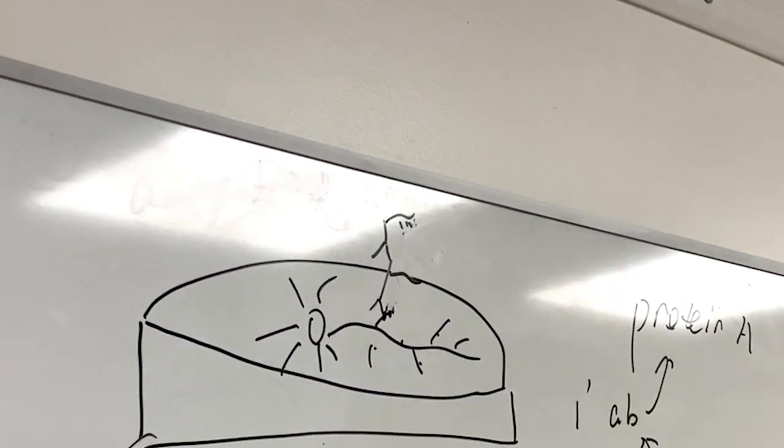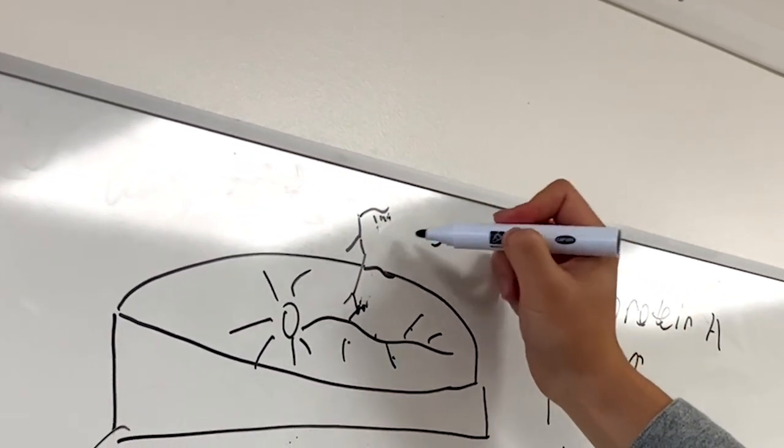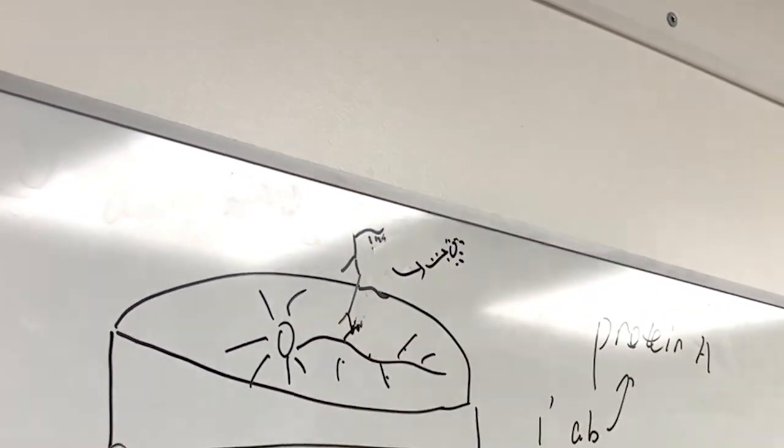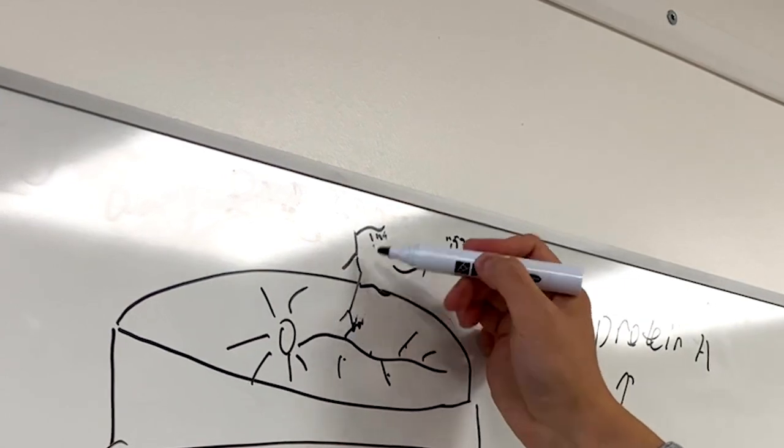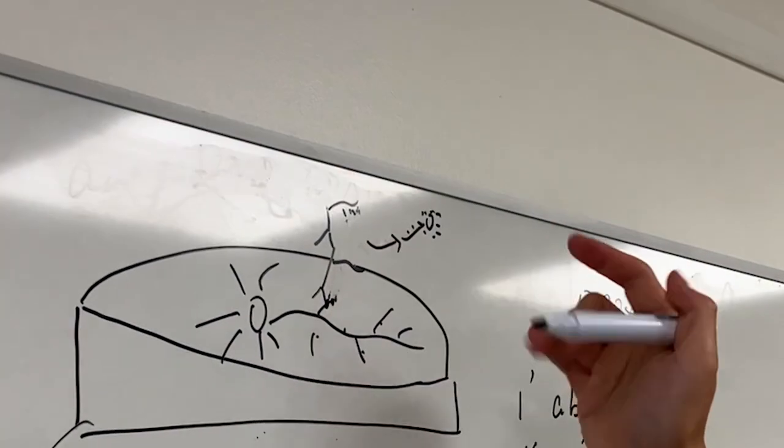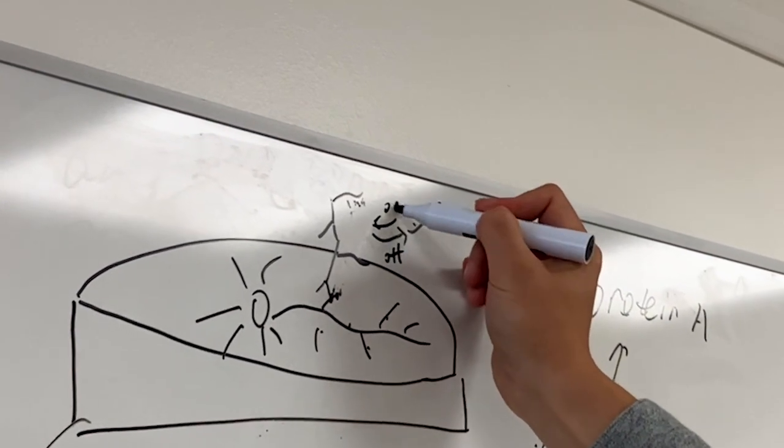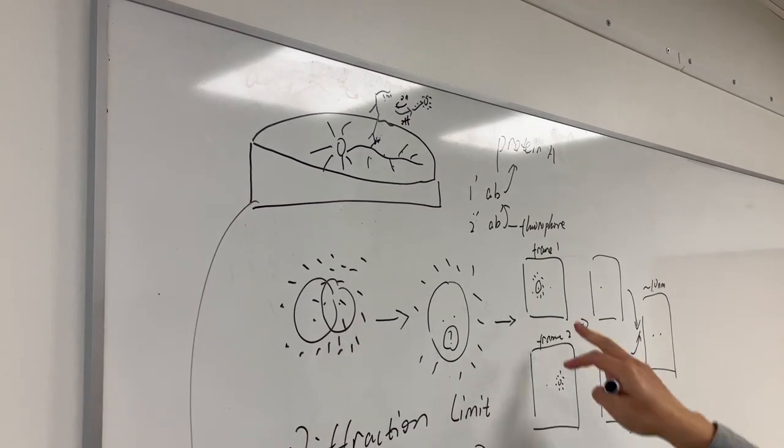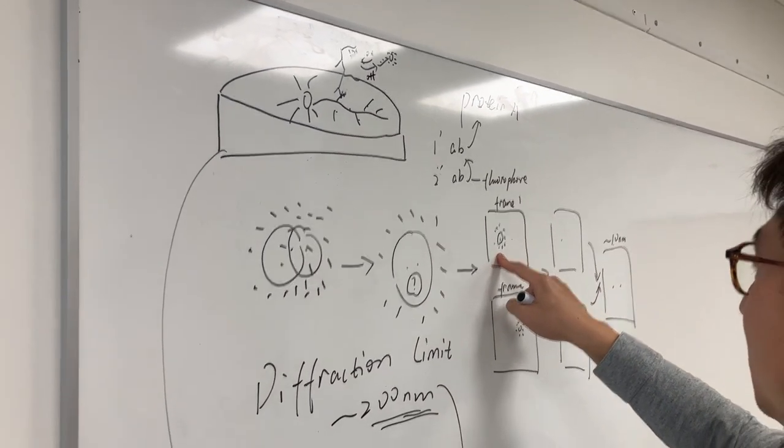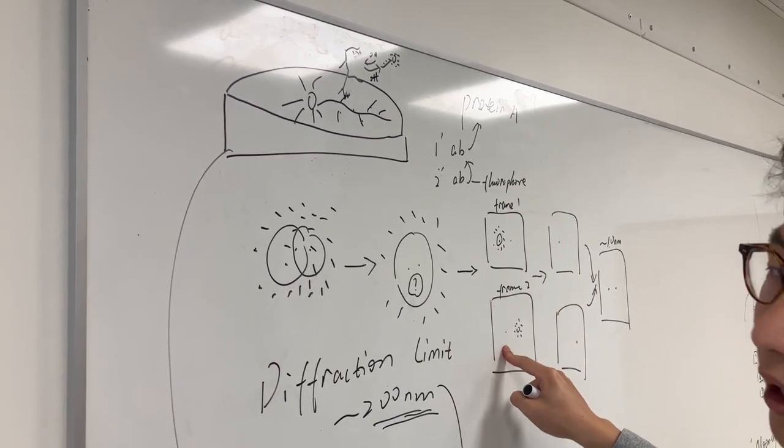And once it dissociates, it went away again. And this protein, this copy of protein, you can't see it anymore because it doesn't have fluorescence. So it's this kind of on-off dynamics that creates this blinking effect that causes molecules to fluoresce in one frame, but not anymore in another frame.